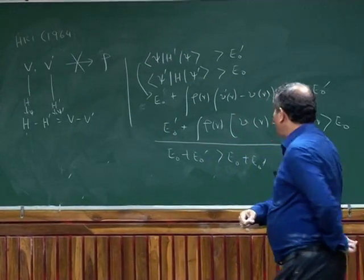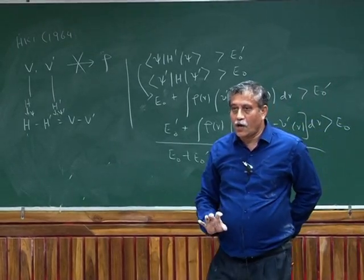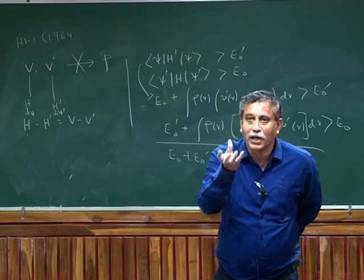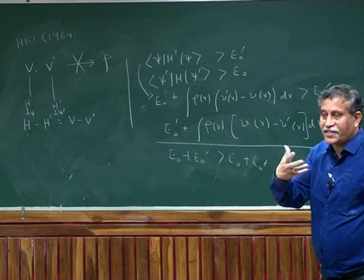And because it is variational bound, it is only for ground state. And that I have, of course, mentioned. Or lower state of the same symmetry. If you know the density belongs to that particular symmetry. That's an extension of this.